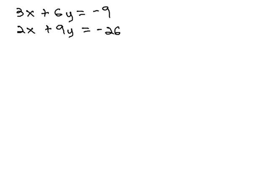In this video, we're going to take a look at solving the system of equations 3x plus 6y equals negative 9, and 2x plus 9y equals negative 26, by using the elimination by addition method.